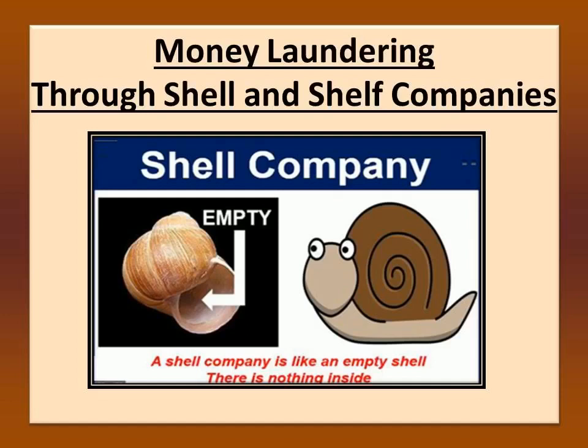Let us understand money laundering through shell companies. A shell company can be defined as a non-operational company — a legal entity that has no independent operations, significant assets, ongoing business activities, or employees, has no physical presence, and produces nothing. In essence, shells are companies that exist mainly on paper; they are frequently used to shield identities and hide money. A shell company can often be identified by red flag indicators including: no phone number, no email address, no physical address, no company logo, no contact person, and no federal identification number. Shell companies can open bank accounts and wire money like any other company, making them a favorite tool for money launderers to hide their business and assets from authorities.